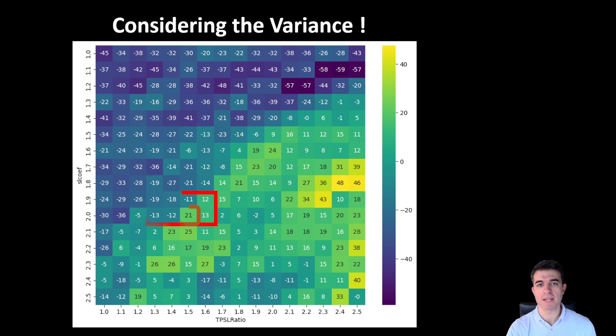For example, this 21% is surrounded by minus 18, minus 11, and so on. We sharply jump from plus 21% to minus 18 or minus 12, as you can see, just by changing any of the take-profit stop-loss ratio or the stop-loss coefficient for the stop-loss distances.